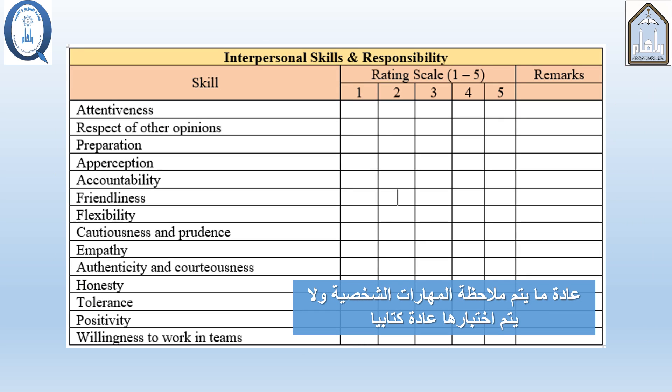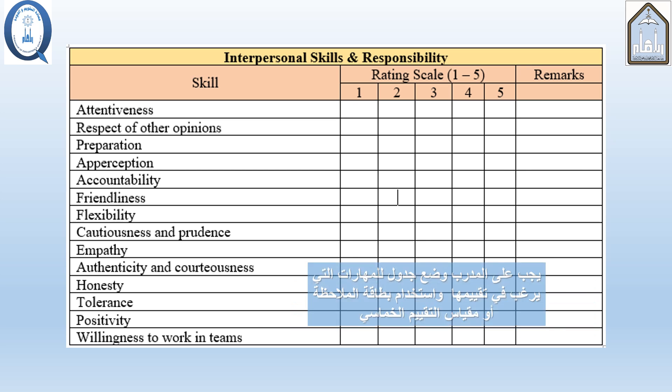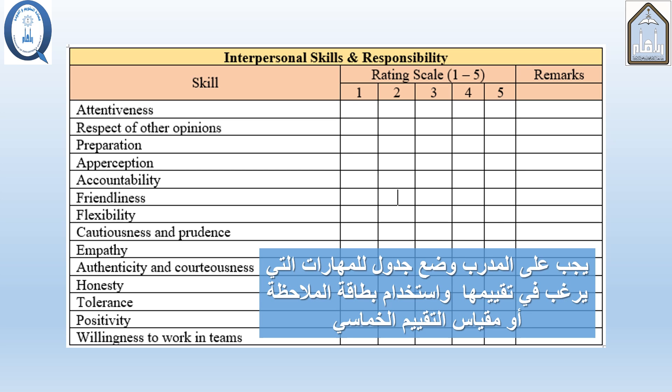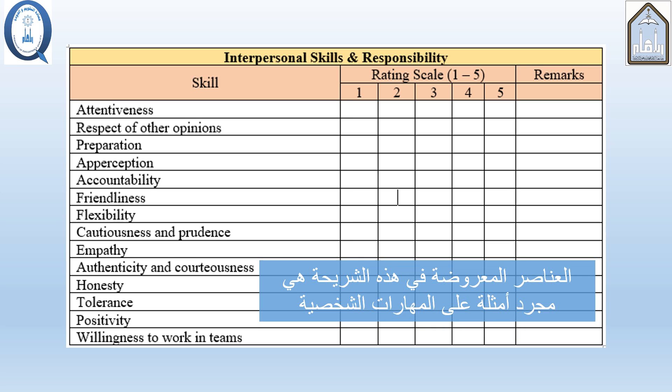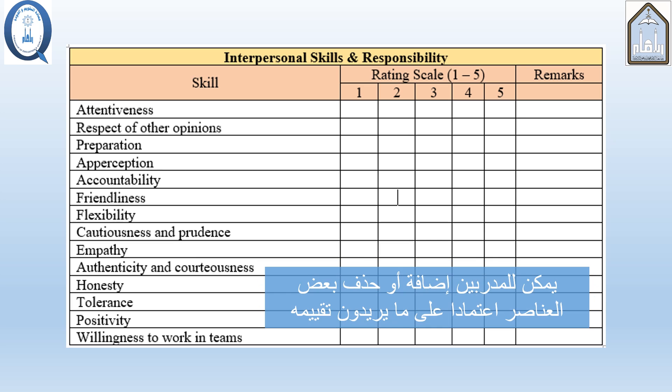Interpersonal skills are usually observed and assessed — they are not usually tested in a written form. The instructor should set a table of the skills that he or she wants to assess and either use a checklist or a five-item evaluation scale. The items shown in this slide are just examples of what skills to assess. Instructors can add or delete some items depending on what they want to assess.